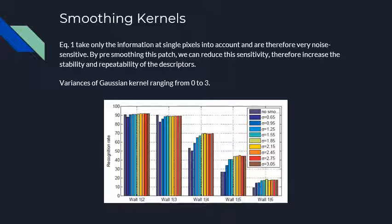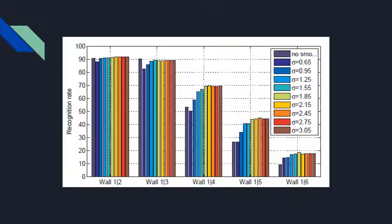The variance of the smoothing kernel has been varied from 0 to 3 in this paper. As you can clearly see in the graph, the recognition rates remain relatively constant in the 1 to 3 range, and in practice they used a value of 2. For the corresponding discrete kernel window, the paper found a size of 9×9 pixels to be necessary and sufficient.